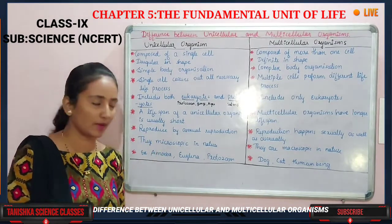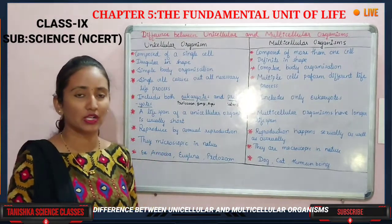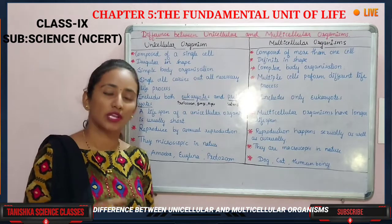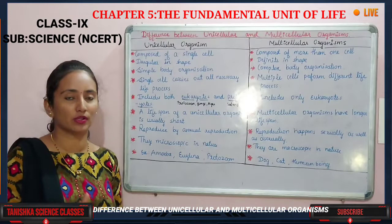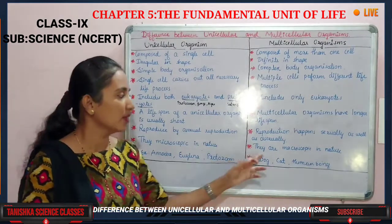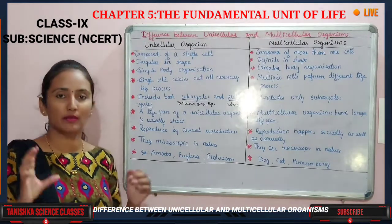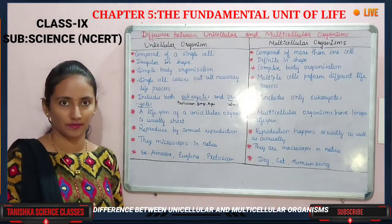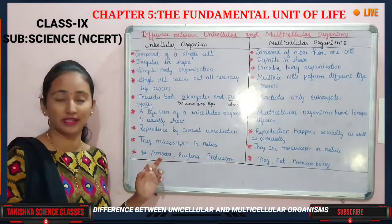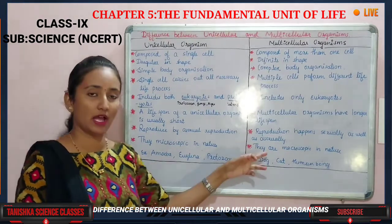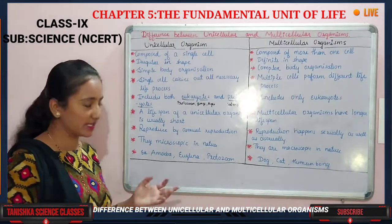The eighth difference is size. Unicellular organisms are microscopic in nature — we cannot see them with the naked eye; we need a microscope to observe them. Multicellular organisms are macroscopic, meaning they are large enough to be seen with the naked eye.